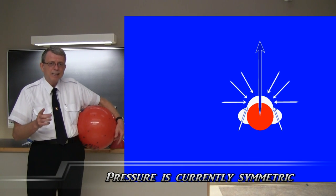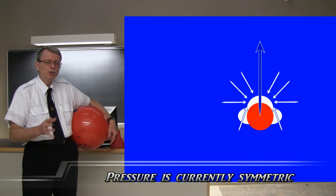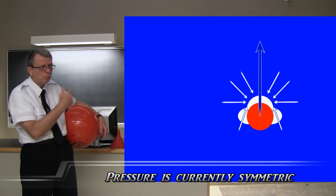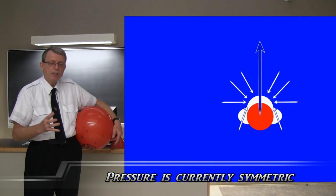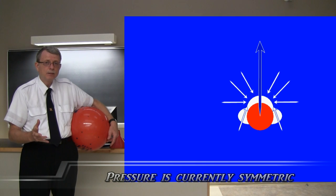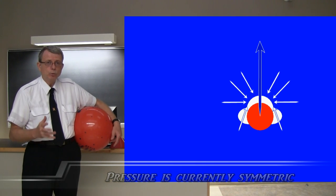We can now ask ourselves, is there some way to distort that donut of pressure around the middle of the ball? Some way to make it asymmetric? And the answer is yes, we can do that.